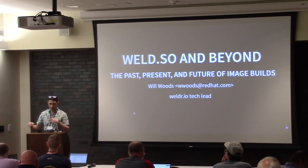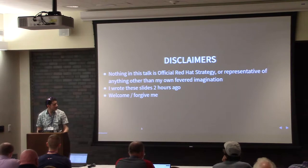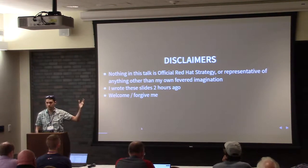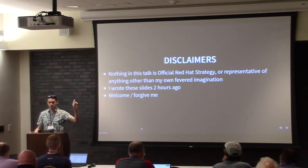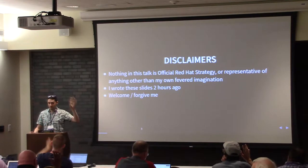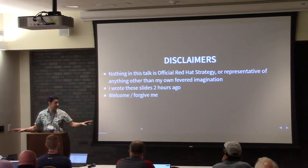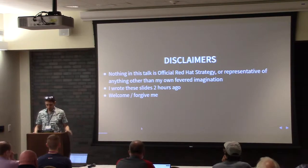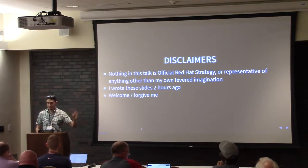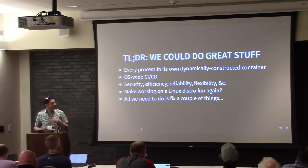The stuff I'm going to talk about is fairly specific to RPM and the way that we at Red Hat build images, but I think the larger lessons apply to the entirety of the Linux ecosystem. Some quick disclaimers: nothing I say here is definitely what Red Hat is going to do. A quick show of hands — who in this room works for Red Hat? For the rest of you, the people who had their hands up: we don't know what number comes after seven. So this has nothing to do with whatever numbers might or might not come after seven. I wrote these notes like two hours ago, so thank you in advance for bearing with me as I ramble.